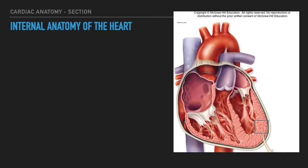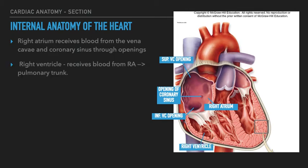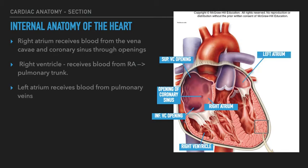Now let's turn to the internal anatomy of the heart, starting with the right atrium. The right atrium collects blood from the vena cavae through the superior and inferior vena cava openings, and also receives blood from the heart itself through the coronary sinus opening. Contraction of the right atrium ejects blood into the right ventricle, which ultimately ejects blood into the pulmonary trunk. The left atrium collects blood from the pulmonary veins, and contraction of the left atrium ejects blood into the left ventricle, which ultimately ejects blood into the aorta.